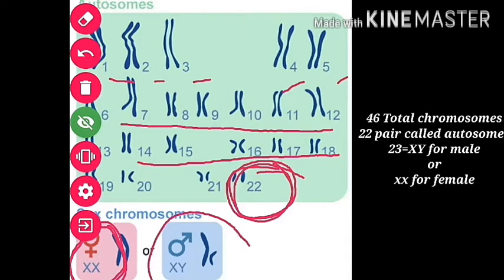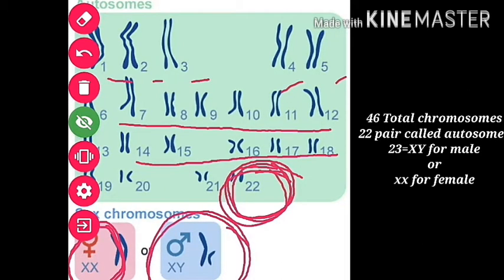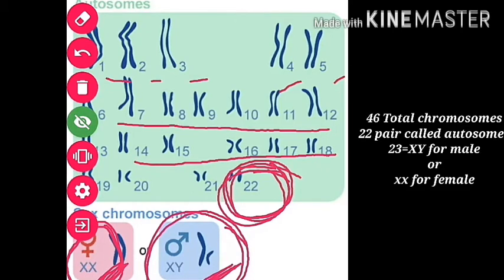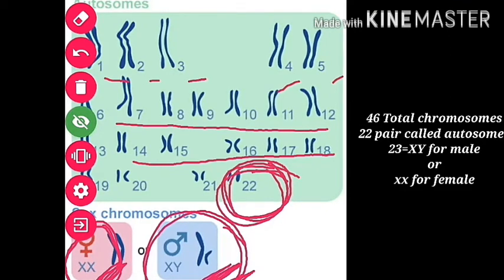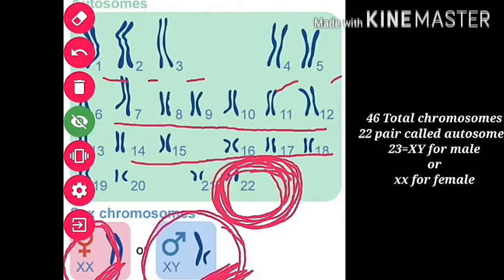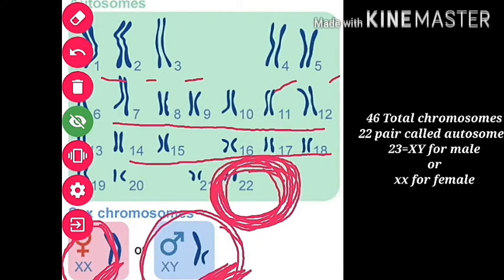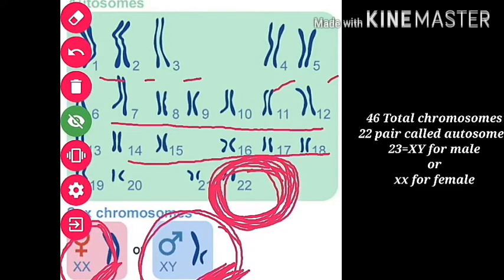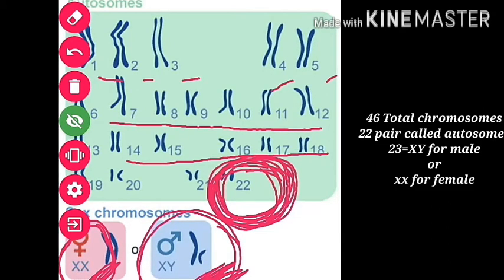The sex chromosome either will be XX or XY. If the 23rd pair is XX, that will be female. If the 23rd pair is XY, that is male. The 22 pairs, whether in male or female, remain the same in both bodies. But the 23rd pair differs — XY means male and XX means female. This is the clear differentiation between autosomes and sex chromosomes. Thank you.